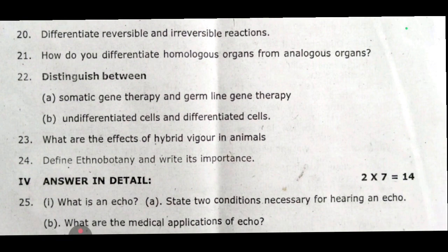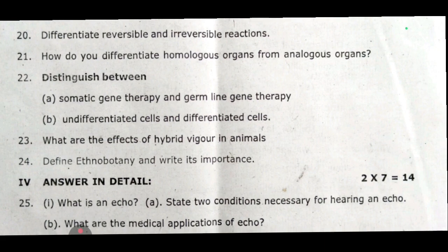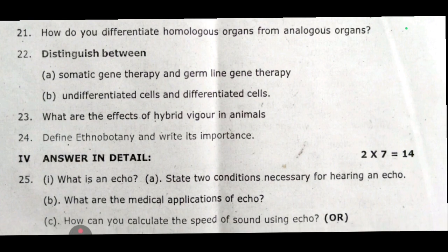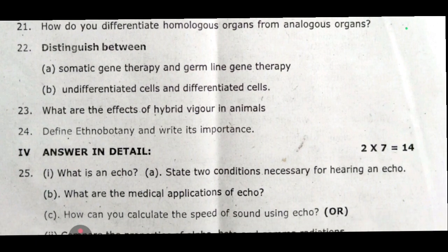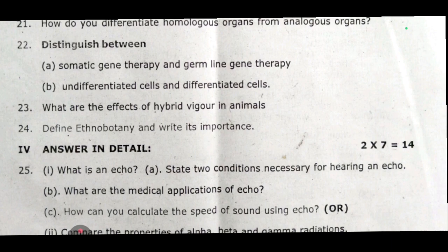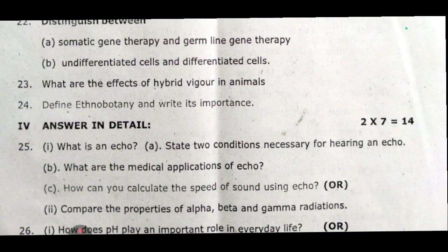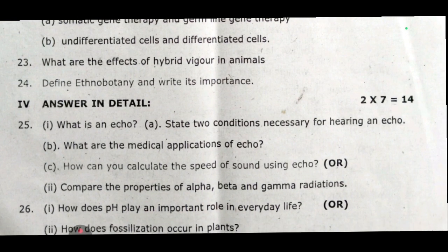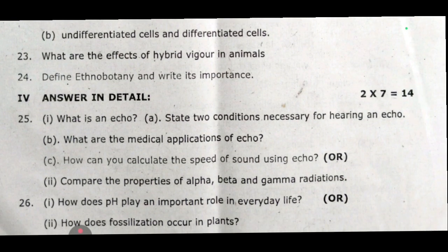Twenty-fifth: part A — what is an echo? State two conditions necessary for hearing an echo. Part B — what are the medical applications of echo? Part C — how can you calculate the speed of sound using echo? Or compare the properties of alpha, beta, and gamma radiations. Twenty-sixth: how does pH play an important role in everyday life? Or how does fossilization occur in plants?